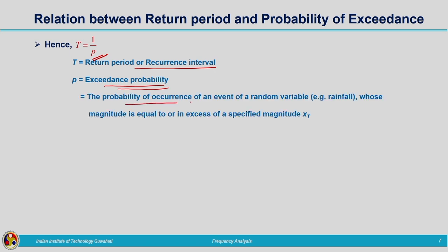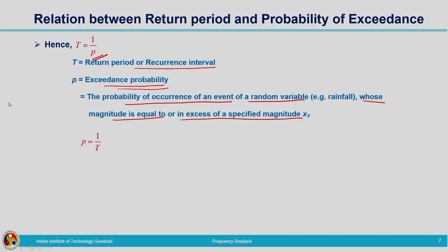Exceedance probability is the probability of occurrence of a random variable whose magnitude is equal to or in excess of a specified magnitude Xt — that is, P(X ≥ Xt). We have the annual maximum values of rainfall data; keeping a threshold value Xt, events equal to or greater than Xt contribute to the exceedance probability. Since return period is 1/p, we can also calculate p = 1/T.